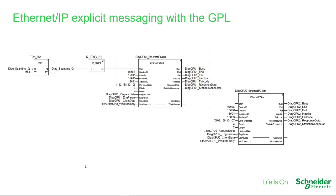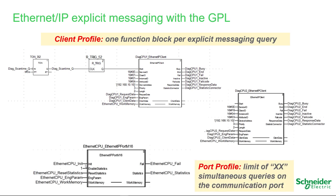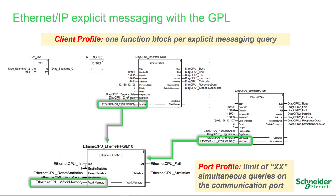For the general purpose library, when using Ethernet IP explicit messaging, you combine two types of function blocks. One is the client profile function block, of which you typically have one instance for each type of query with its class, instance, and attribute parameters. All client function block instances are connected through a work memory variable, and all communications are managed by a single port profile function block that controls the number of simultaneous queries active at a given time.